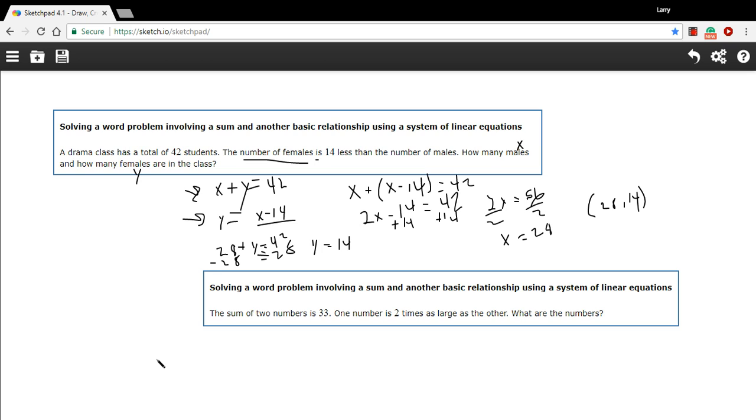Let's take a look at this second one. This is another common type of these problems that will pop up involving numbers. It says the sum of two numbers is 33. One number is two times as large as the other. What are the numbers? So we're looking for two things here, two numbers. I'm going to call them x and y.